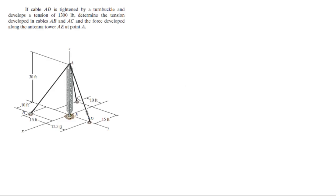For more videos visit ForTheSakeOfEducation.com. Now let's do this problem: cable AD is tightened by the turnbuckle and develops a tension of 1300 pounds. Find the tension developed in BAC and the force developed on the antenna AE at point A.